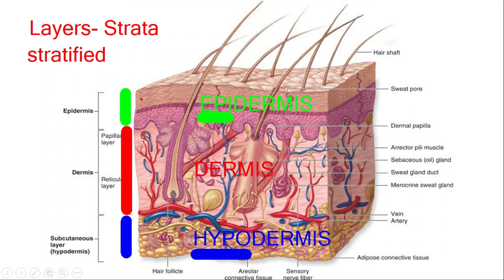There should be a basement membrane below the epidermis, which I am drawing here in red. So there is a basement membrane between the dermis and epidermis. The important thing is that epithelial tissue is avascular — the epidermis is avascular, meaning it does not contain blood vessels, and therefore no direct blood supply or oxygen delivery.